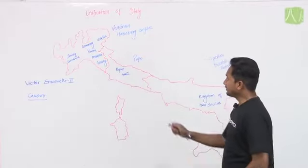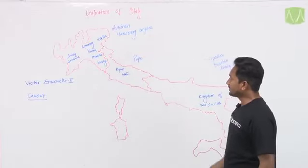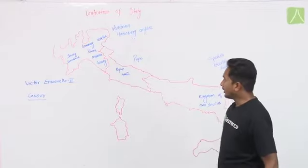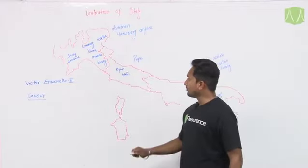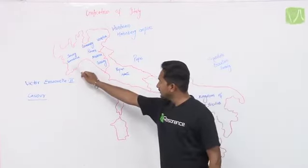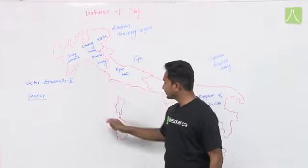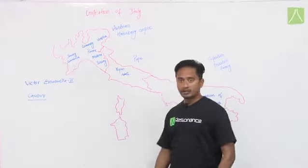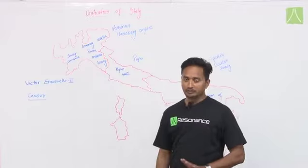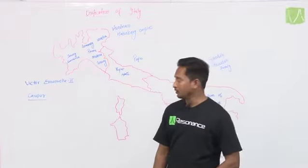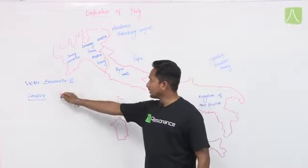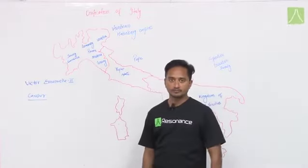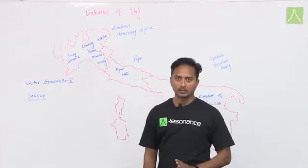If you look at the map of Italy, you will see clearly that Italy was divided into seven different empires. The first part is Sardinia and Piedmont — both Sardinia and Piedmont were part of Italy. This part of Italy belonged to Victor Emmanuel II, who was the legitimate ruler of Italy.